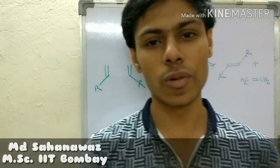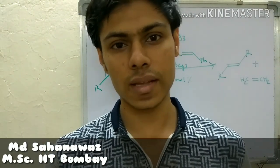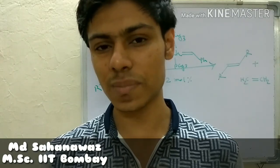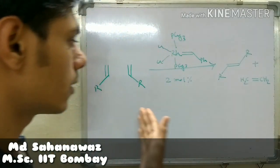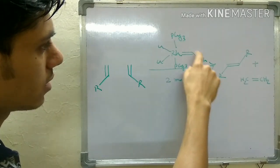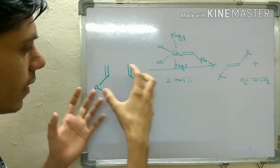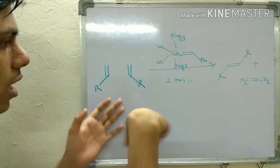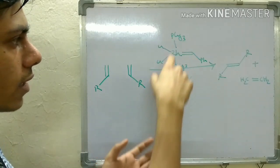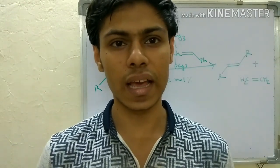Good morning friends. In this video I am going to discuss the most important topic for competitive exams like NET or GATE, and that is alkene metathesis using Grubbs' catalyst. Metathesis means the exchange of two groups. This rhodium complex contains a phenylmethane carbene, and two alkenes react to form new alkenes. This is called a metathesis reaction because in this complex, exchange of ligands occurs between these two.